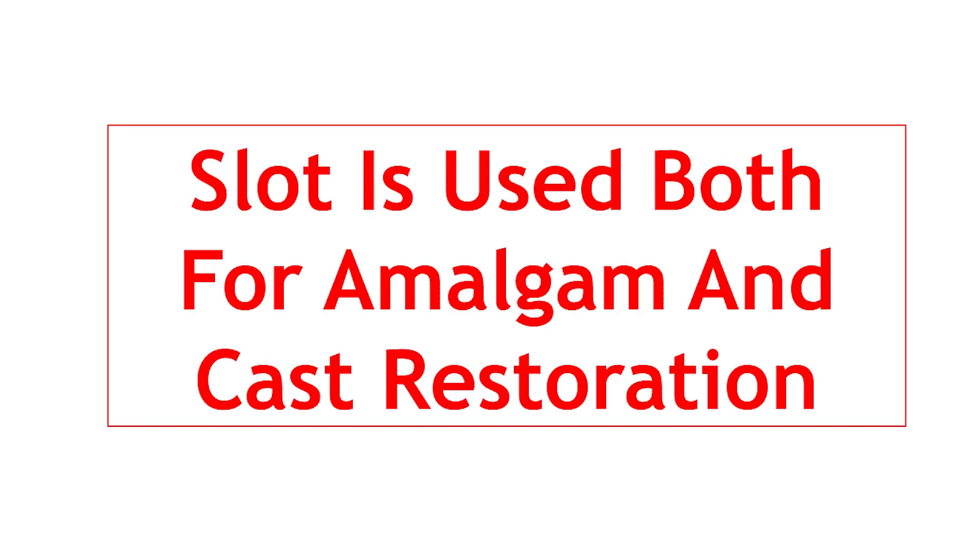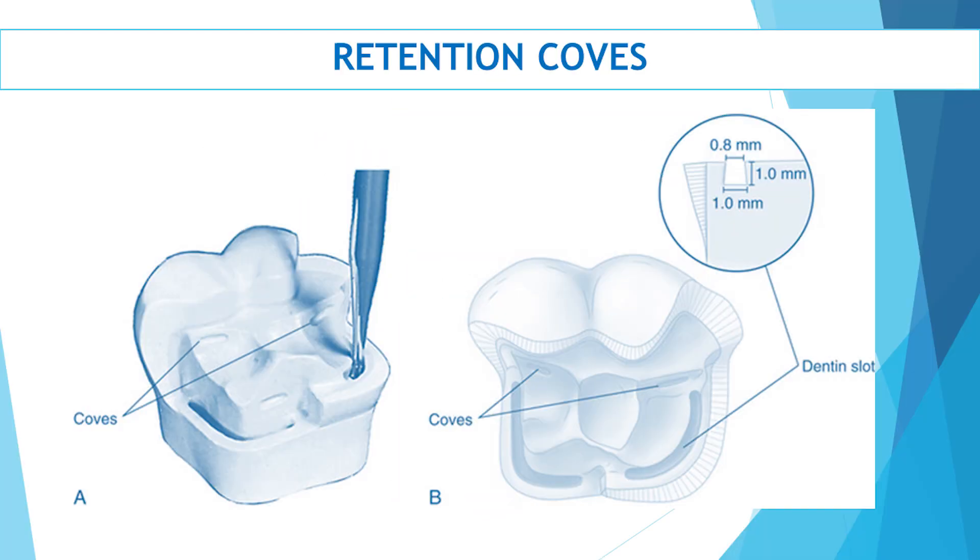Then comes the retention cove, given for amalgam restoration and not for cast restoration. This is basically small retention grooves into the floor or wall of the restoration into the dentin, with dimensions around 1 mm depth and 1 mm height.